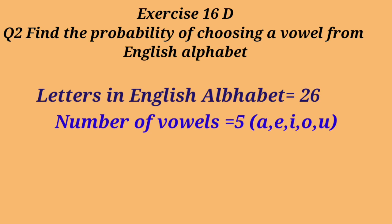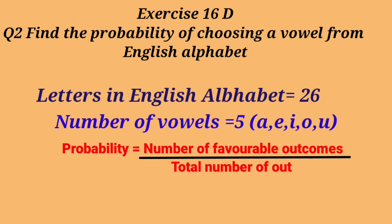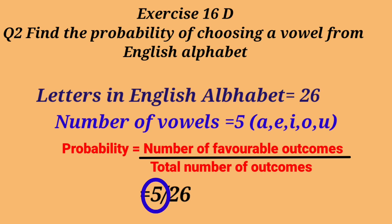Now let's calculate probability. What is the formula? It is number of favorable outcomes upon total number of outcomes. Number of favorable outcomes, that means number of vowels, they are 5. And total number of outcomes, they are 26 because there are 26 letters. So probability is 5 upon 26.